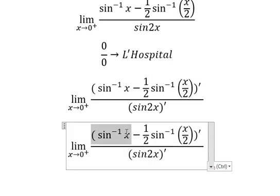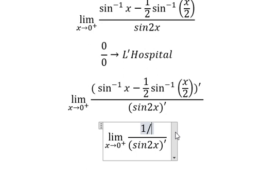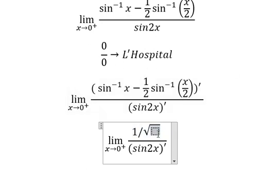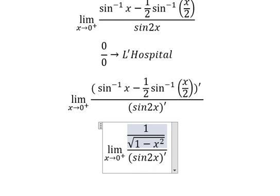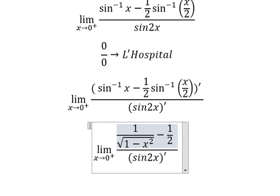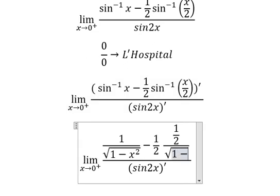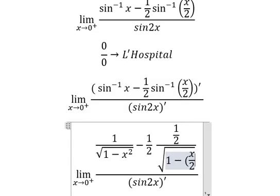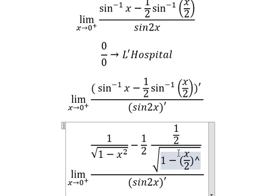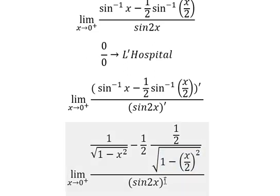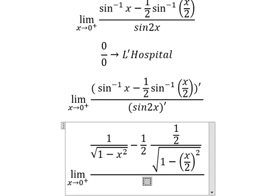So this one we have zero here, so this one will be one over the square root of one minus x squared. The second one will be one over two, over the square root of one minus x over two, everything to the power of two. And this one will be two cosine two x.